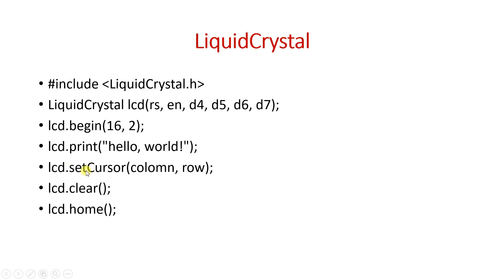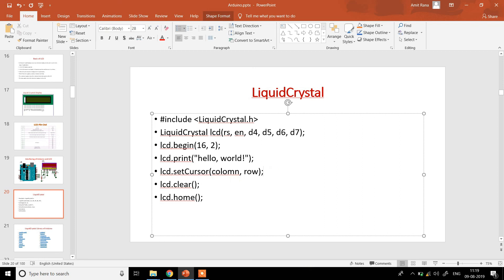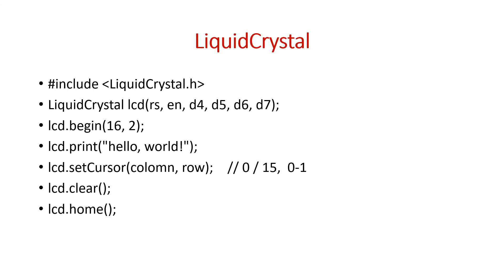lcd.setCursor() sets the cursor to print at a particular location, with arguments for column and row. Columns range from 0 to 15 and rows are 0 or 1 for a 16 by 2 display. Set the column and row accordingly, then use lcd.print() to output text. lcd.clear() clears everything printed on the LCD, and lcd.home() moves the cursor back to position (0, 0) — the 0th column and 0th row.